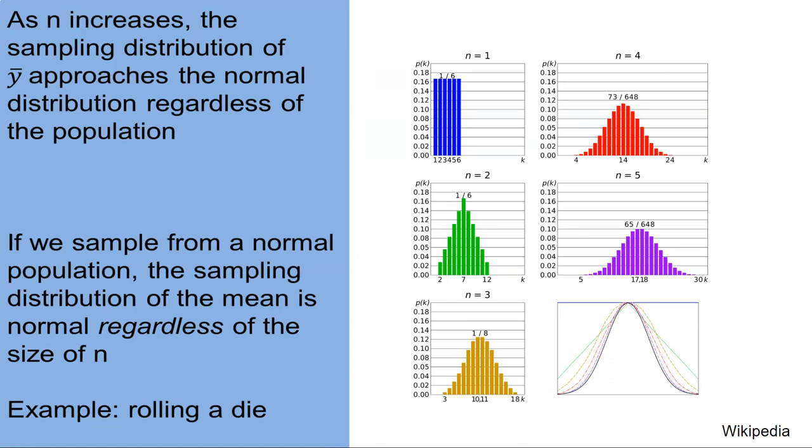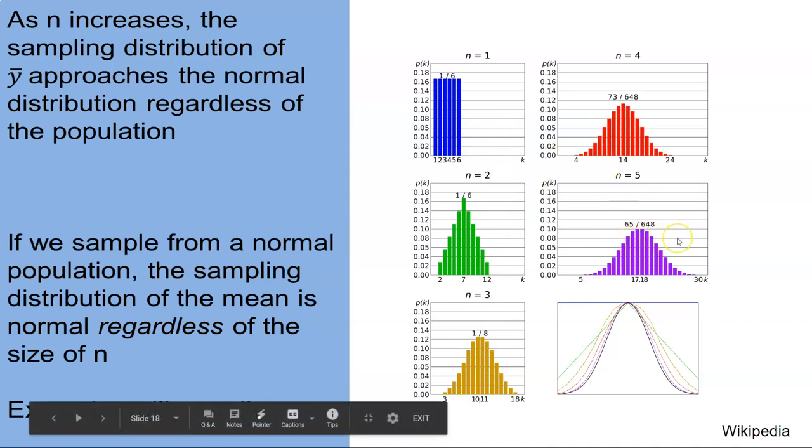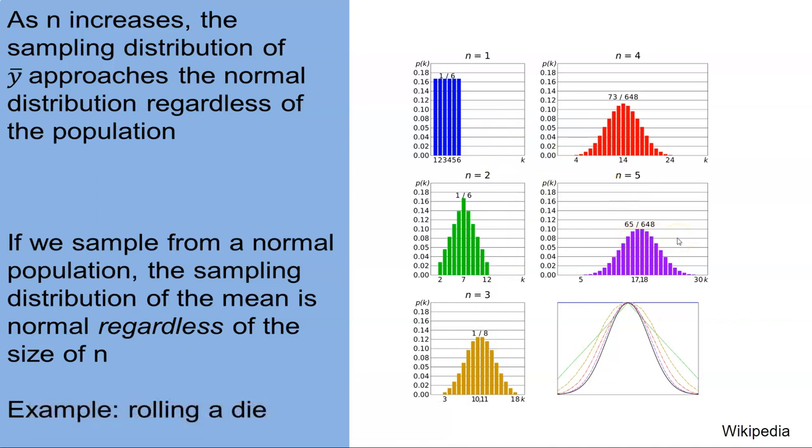Here's an example showing that as n increases, that sampling distribution of y bar really approaches a normal distribution, no matter what the underlying distribution is. So what you're seeing here on the right are an example of rolling a die. And then we sum all of the rolls, all of those numbers that we get on each roll. And you can see that as the sample size increases from one to two to three to four to five, the distribution begins to look like a normal bell-shaped distribution.